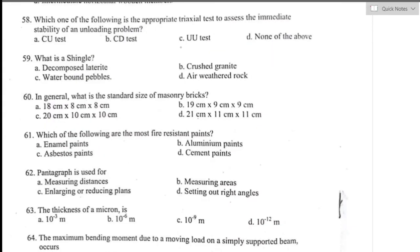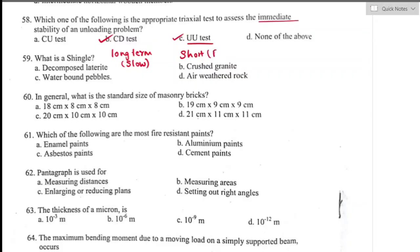Question number fifty-eight: which triaxial test is appropriate to assess immediate stability of an unloading problem? For short-term stability, it is mainly done by the unconsolidated undrained test. Option C is the right answer. The consolidated drained test is done for long-term stability, with drainage permitted during both the cell pressure and shear stages — it is a slow process.